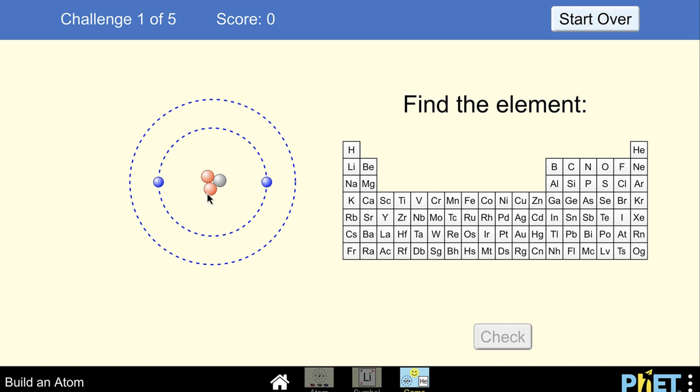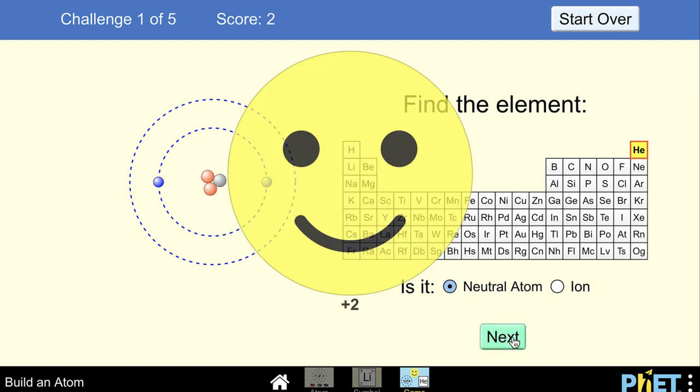So hydrogen is the first, helium is the second, therefore that is helium. And now it's asking you is this a neutral atom or is it an ion? Well, you'd look here, it has two positive charges and two negative charges that makes it neutral. So you can do that and then check.